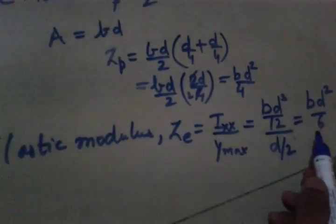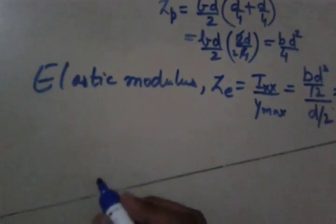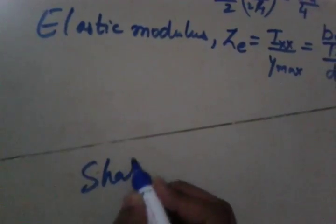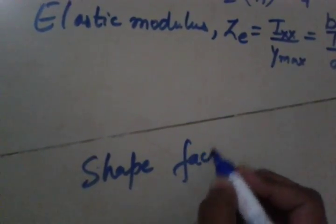So now we have plastic modulus as BD square divided by 4 and here we have BD square divided by 6, that is the elastic modulus. So now we need to calculate shape factor.